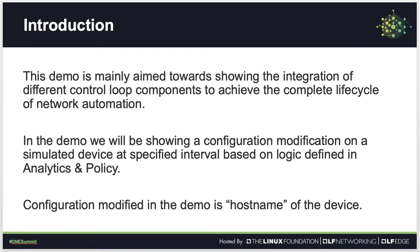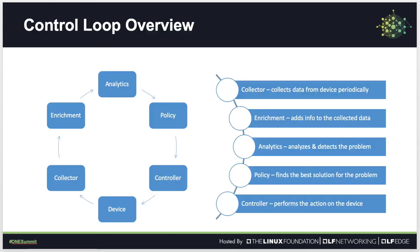The modification happens at a specified interval based on logic defined in analytics and policy. The configuration modified in the demo is the host name of the device. In general, the control loop flow starts from device and goes through collector, enrichment, analytic, policy, controller, and then back to the device. The device is the entity that is being managed by the control loop. The collector collects data from the device periodically.